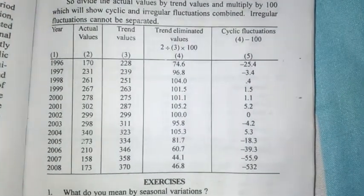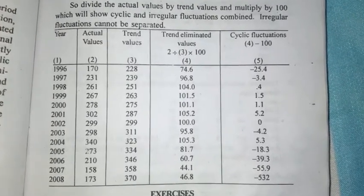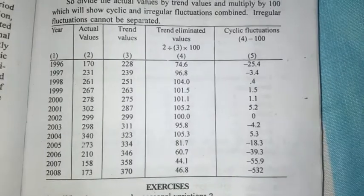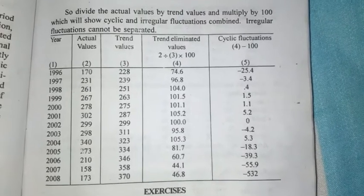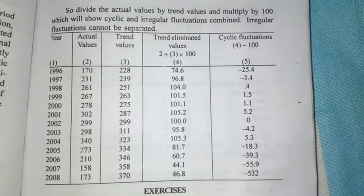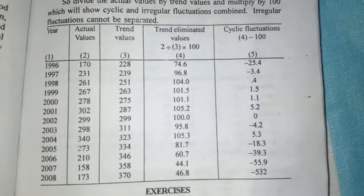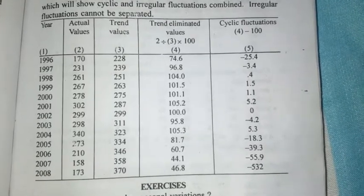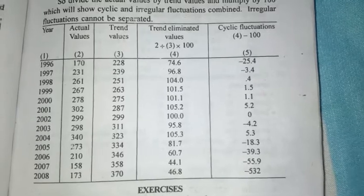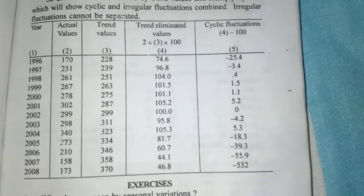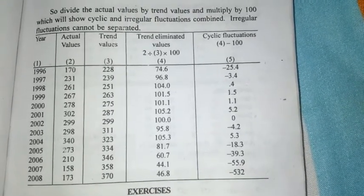For the first year, covering the period 1996 to 2008, we look at the actual value and the trend value. We have to divide the actual value by the trend value and multiply by 100. For the first year, the trend value is 228. So: 170 divided by 228 into 100 gives us the trend-eliminated values.